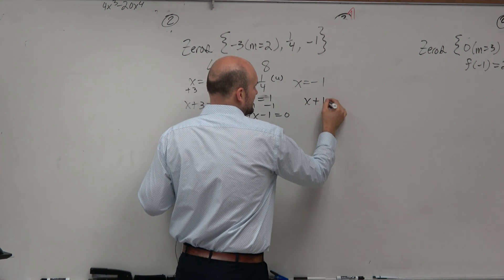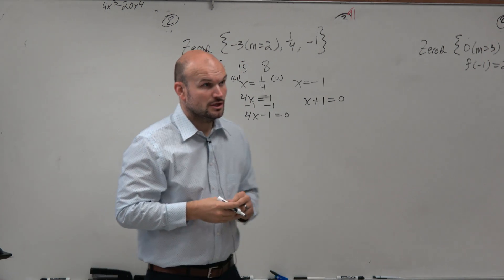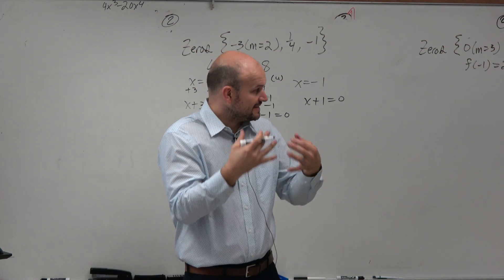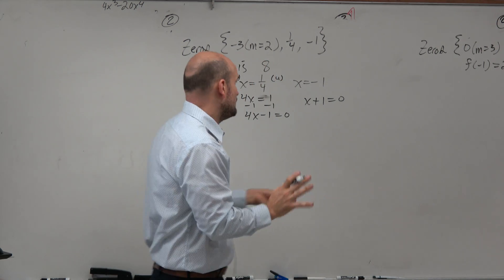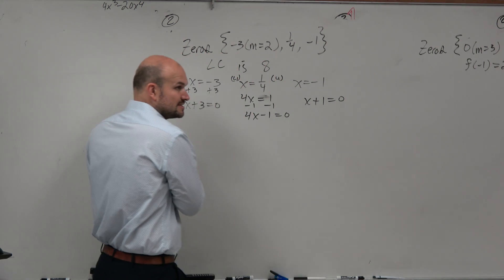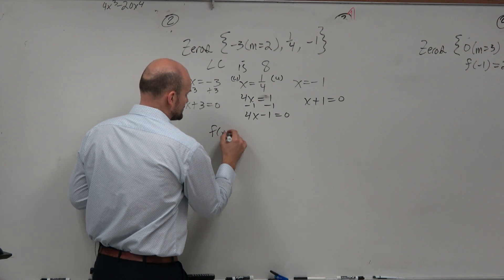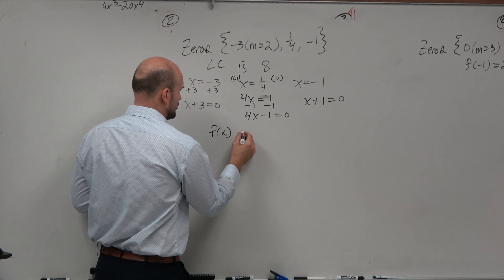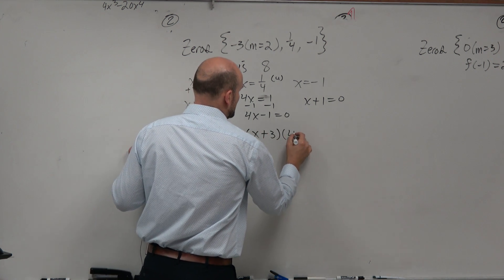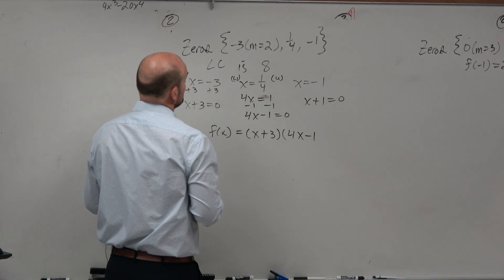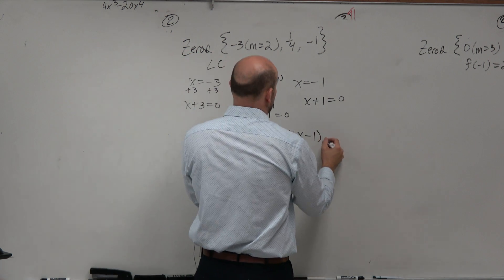Hopefully you guys understand that one. So now we know that we have these factors. We set them equal to 0 because we were trying to solve. Now we know that if we just multiply the factors, we're going to get our polynomial. So f(x), or whatever the name my polynomial needs to be, is going to be (x + 3)(4x − 1)(x + 1).